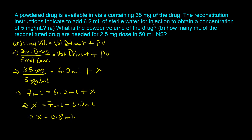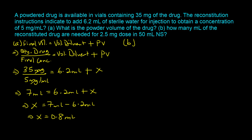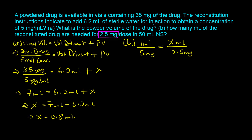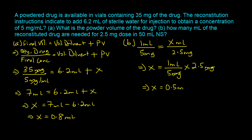We can now proceed to part B, which asks how many milliliters of reconstituted drug are needed for a 2.5 milligram dose. Using the final concentration of 5 milligrams per milliliter — meaning each milliliter contains 5 milligrams of drug — we set up a proportion: X equals 1 milliliter divided by 5 milligrams times 2.5 milligrams. The milligrams cancel out and X equals 0.5 milliliters.